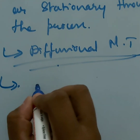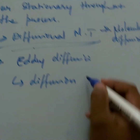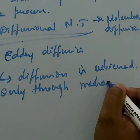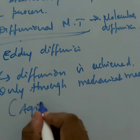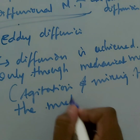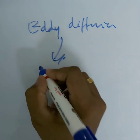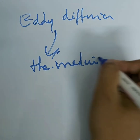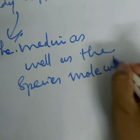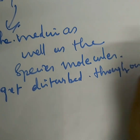Another type of diffusion is eddy diffusion. This diffusion is achieved only through mechanical means — that is, by giving agitation and mixing through the medium. In eddy diffusion, we see that the medium as well as the species molecules get disturbed throughout the process.